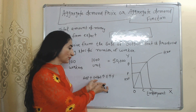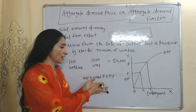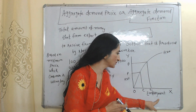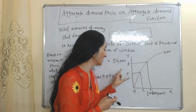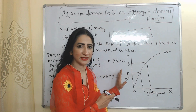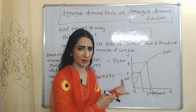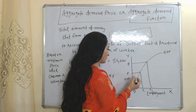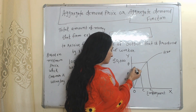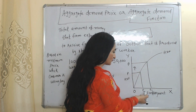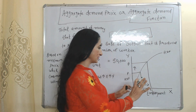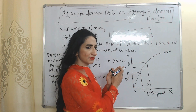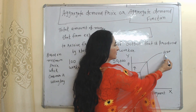As output increases, employment increases, and as employment increases, income will also increase. In this diagram, on the X-axis we have employment and on the Y-axis we have aggregate demand price. As aggregate demand price increases from P to P1, employment also increases from E to E1. So there is a direct relation between employment and aggregate demand price, and this curve is called the aggregate demand function curve.